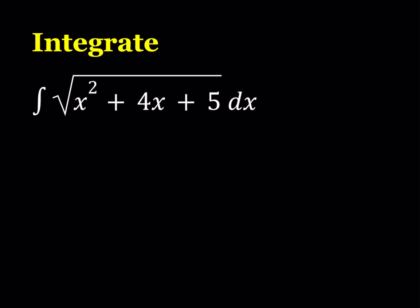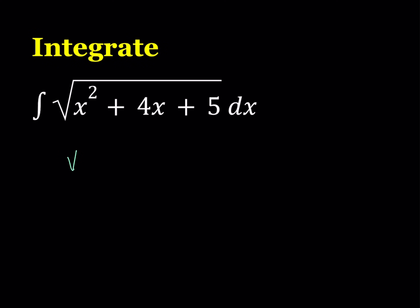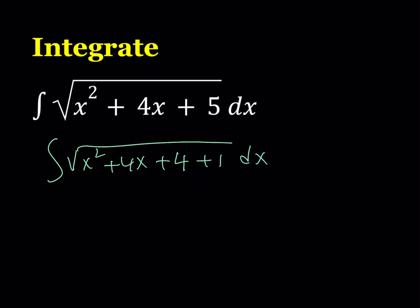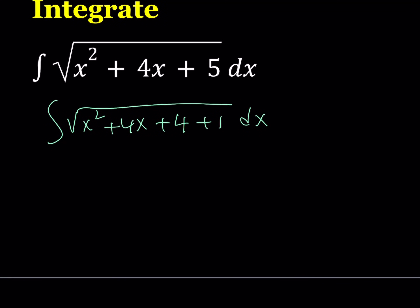We can write x squared plus 4x plus 5 as the square root of x squared plus 4x plus 4, which is x plus 2 quantity squared, plus 1. My goal is to separate the perfect square, so this is equivalent to the square root of the quantity x plus 2 squared plus 1, dx.